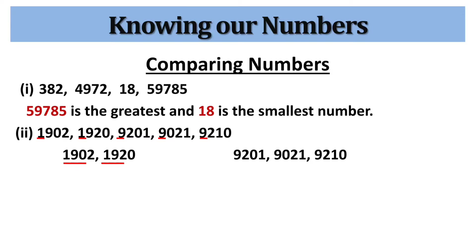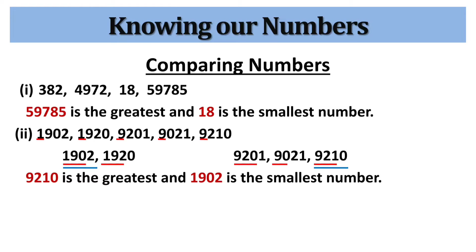To find the greatest number, the three numbers have 9 in the thousands place. At the hundreds place, the digits are 2, 0, and 2. Consider the numbers with digit 2 at the hundreds place. At the tens place, the digits are 0 and 1. The number with the greater digit is the greatest number. Therefore, 9210 is the greatest and 1902 is the smallest number.